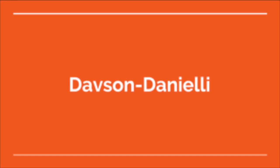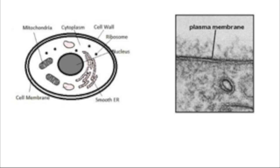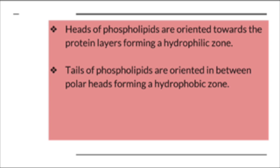The Davson-Danielli model is a falsified model of a cell membrane. Defined by the model, a cell membrane is made of a phospholipid bilayer sandwiched between two layers of globular protein. The polar hydrophilic heads of phospholipids are oriented towards the protein layers, forming a hydrophilic zone. Consequently, the non-polar hydrophobic tails of phospholipids are oriented in between the polar heads, forming a hydrophobic zone.